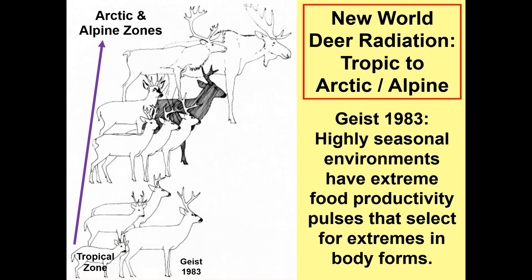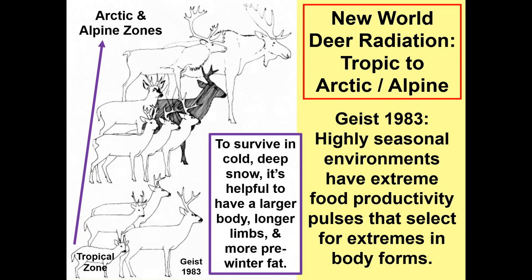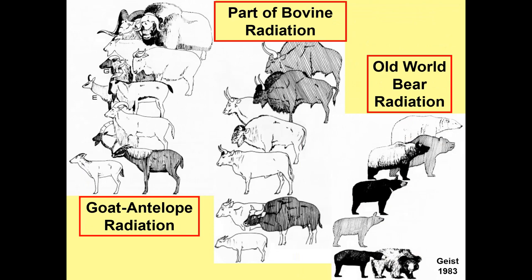Geist also described how highly seasonal environments have extreme food productivity pulses that select for extremes in body forms. The tropical zone, where it's warm and equitable, doesn't differ much between summer and winter — you have a pretty good food supply year round. That's nothing compared to what the moose, elk, and caribou face in the arctic or subarctic — surviving cold, deep snow. It's helpful to have a larger body, longer limbs, and more pre-winter fat. The goat-antelope radiation and old-world bear radiation show the same pattern — from tropical to subarctic forms — and they get larger, with more complex brains and the ability to really pack on fat.